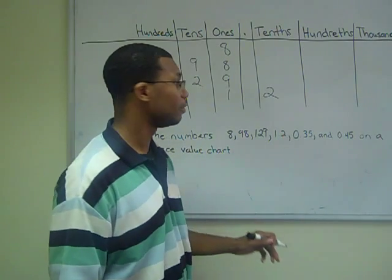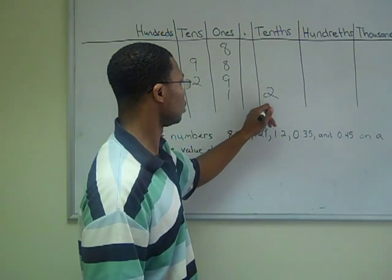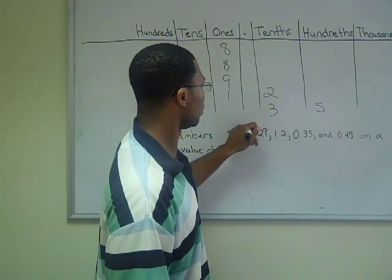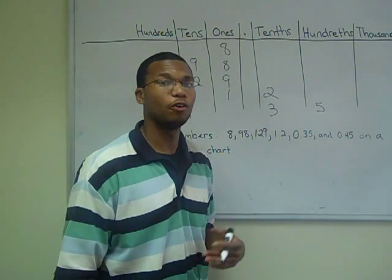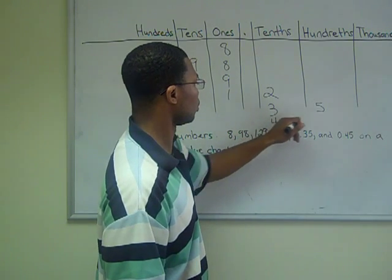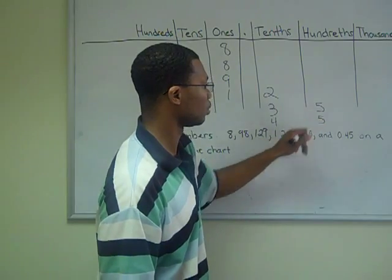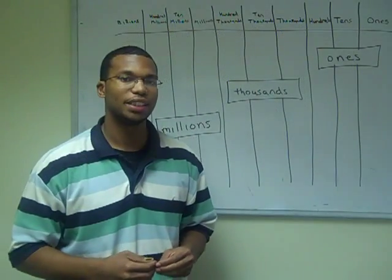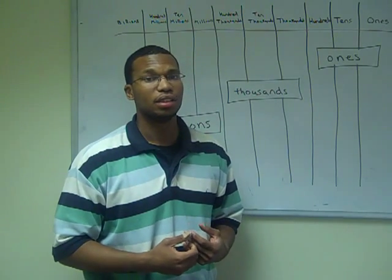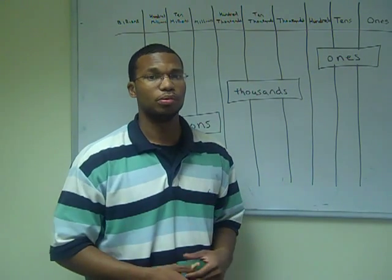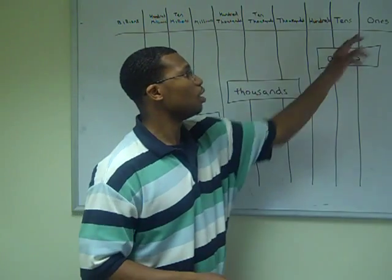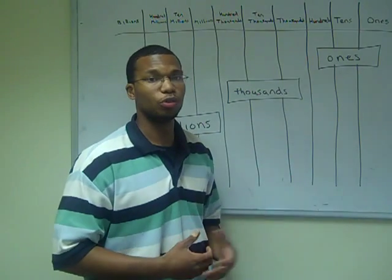Then we have the number 1.35, and the number 0.45. Notice that to the left of the decimal point, after every three digits, it composes a new subgroup. Those subgroups are comprised of ones, tens, and hundreds in their respective group.